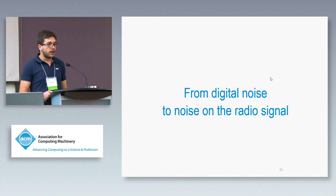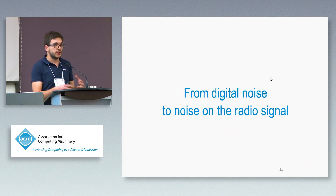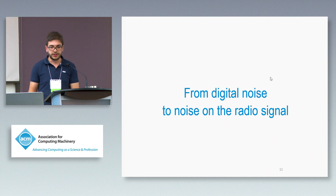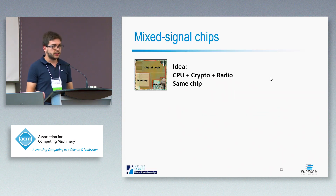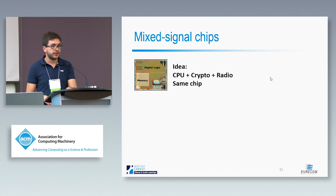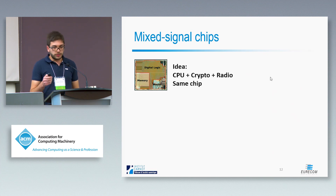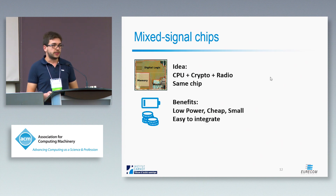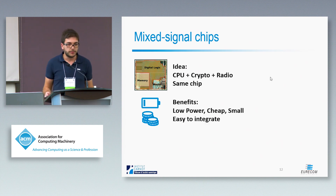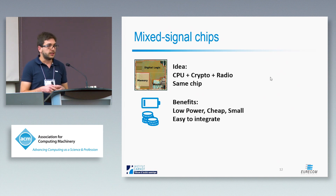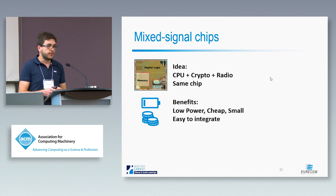But how do we move from having digital noise in the digital domain to having noise in the radio transmission and exploit it? Let's look at the mixed signal chips. The idea is to put on the same silicon die a CPU, some cryptographic hardware, some peripherals, and a radio. This is done because it is extremely convenient in terms of cost, power, area, and ease of integration — a designer can take one single chip, program an application on its processor, and with simple APIs access popular wireless protocols such as Wi-Fi and Bluetooth.